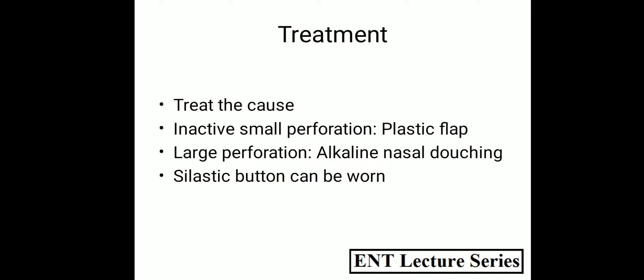Treatment of septal perforation focuses first on treatment of the cause. If we are able to identify any cause of the perforation — for example, an occupational heavy metal industry exposure, or if there is any granulomatous condition — then we should try to treat that cause first. Then, if there is an inactive small perforation, local plastic flaps from the nasal mucosa can be used to cover that perforation. If it is a large perforation, then there are very limited surgical options. To prevent the crusting, we instruct the patient to do alkaline nasal douching, which will loosen the crust and prevent epistaxis. And sometimes a silastic button is used, which will give symptomatic relief to the patient.